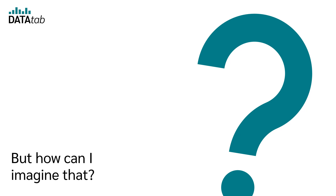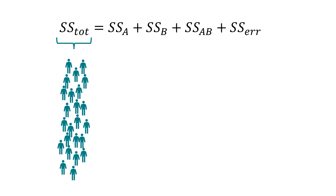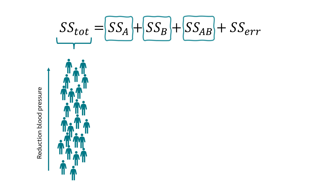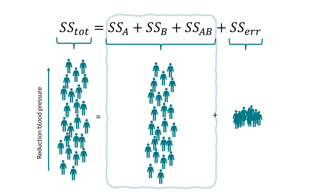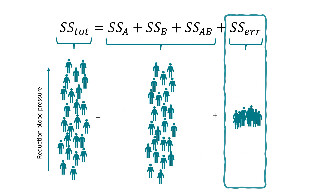But how can we imagine that? The dependent variable has some variance. In our example, not everyone will have the same reduction in blood pressure. We want to know if we can explain some of this variance by the variables drug type, gender, and their interaction. The part we cannot explain accumulates in the error. If the result looked like this, we would be able to explain almost all the variance by factors A and B and their interaction, with only a very small unexplained proportion.